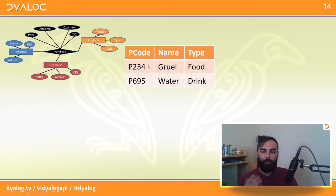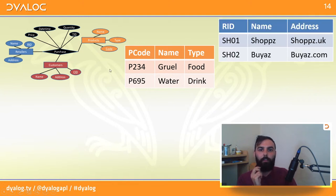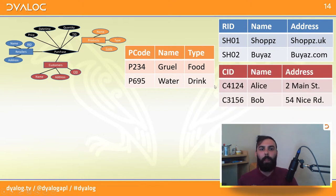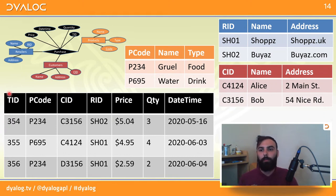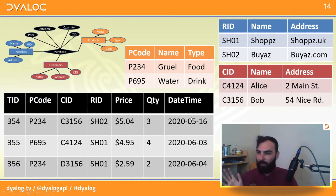Let's turn these into tables. Our products table has three columns corresponding to its three attributes, similarly with the retailers and the customers. The purchase table has not only the price, quantity, and date-time specific to each purchase, but also references out: product codes, customer IDs, and retailer IDs. In this table, the transaction ID is what's called the primary key, and the three keys that reference the other tables are the foreign keys — that is what enables looking up and joining.